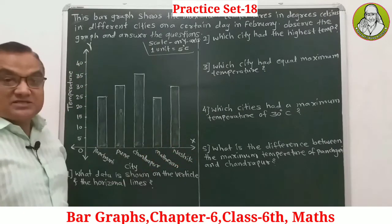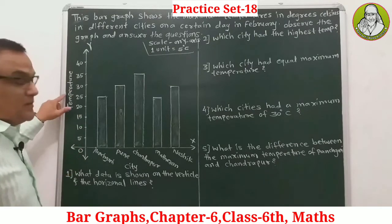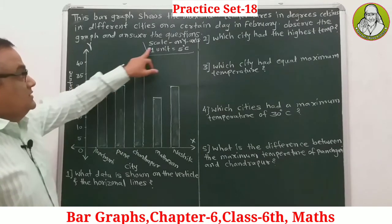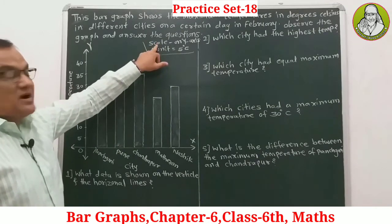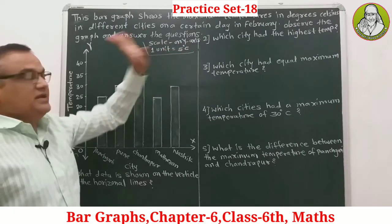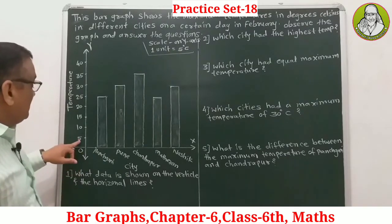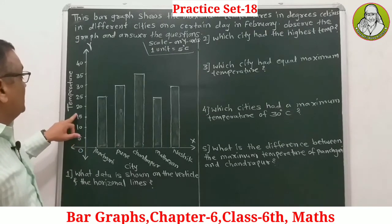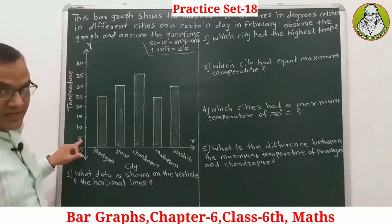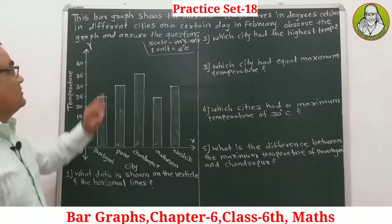On the x-axis we have the city names, and on the y-axis we have the temperature. The scale is very important — on the y-axis, 1 unit equals 5 degrees centigrade. So we have values: 0, 5, 10, 15, 20, 25, 30, 35, 40 — with differences of 5 degrees each. We have 5 cities shown in this bar graph.